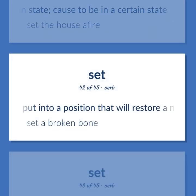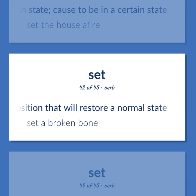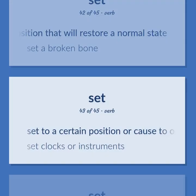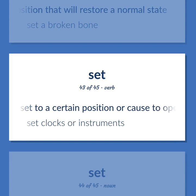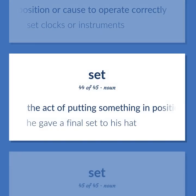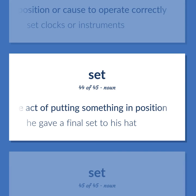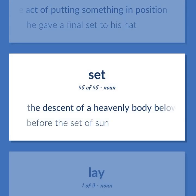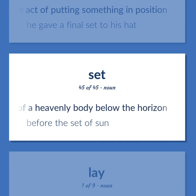Put into a position that will restore a normal state. Example: Set a broken bone. Set to a certain position or cause to operate correctly. Example: Set clocks or instruments. The act of putting something in position. Example: He gave a final set to his hat. The descent of a heavenly body below the horizon. Example: Before the set of sun.